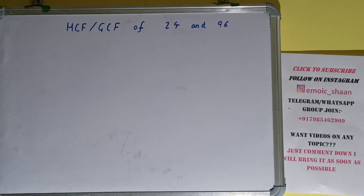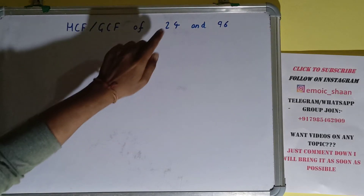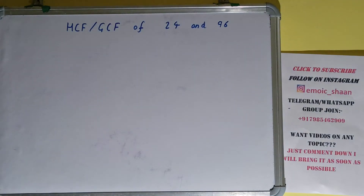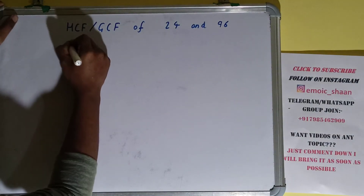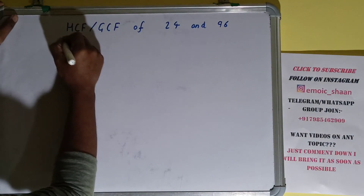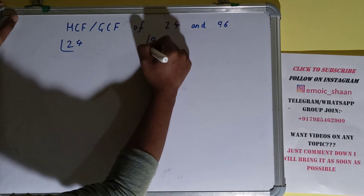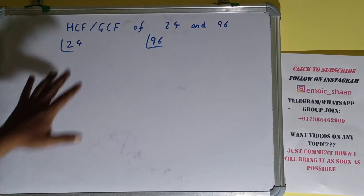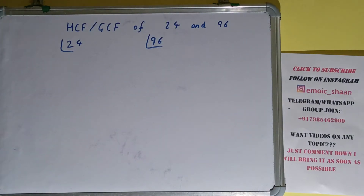Hello friends, and in this video I'll be helping you with the HCF or the GCF of the numbers 24 and 96. So let's start. To find it out, we first need to write each of the numbers separately and prime factorize each of them.